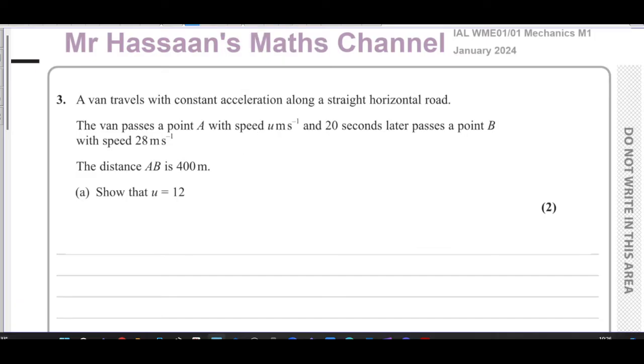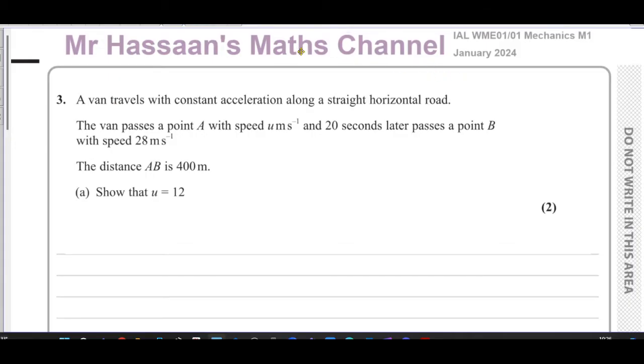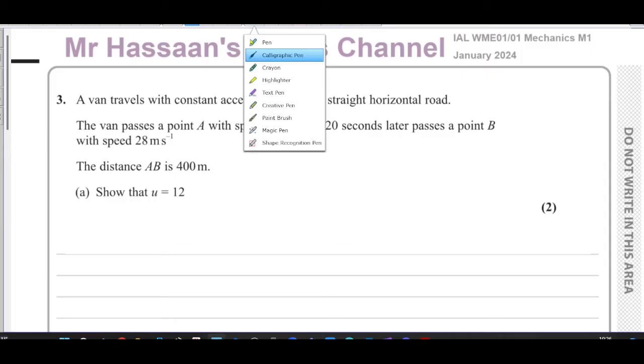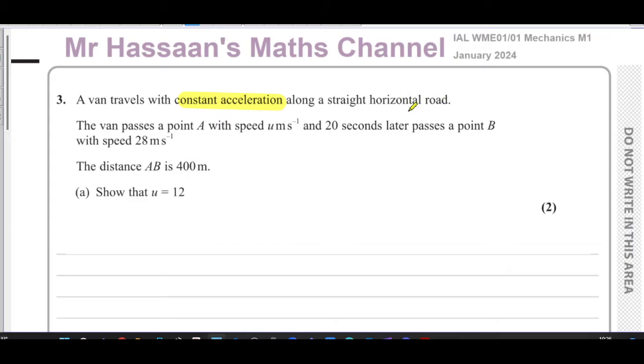Welcome back, this is Mr Hassan's Maths Channel and I am now going to be answering question number three from the January 2024 Mechanics M1 paper from Edexcel International A-Level. This question here, we have a van travels with constant acceleration. Constant acceleration should trigger in our mind the SUVAT equations along a straight horizontal road. Constant acceleration on a straight road in one direction, that means we can apply SUVAT.